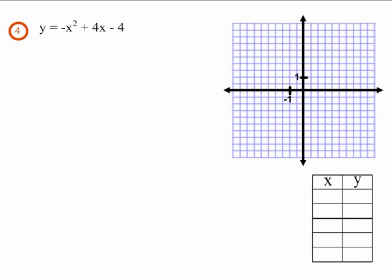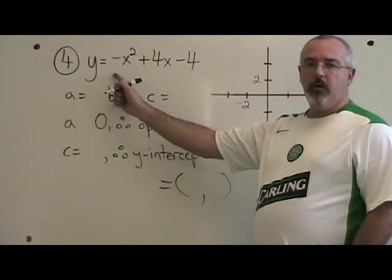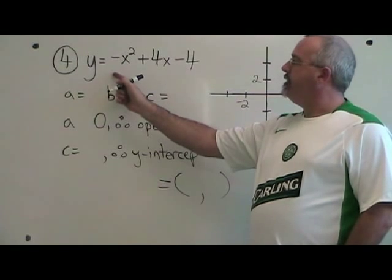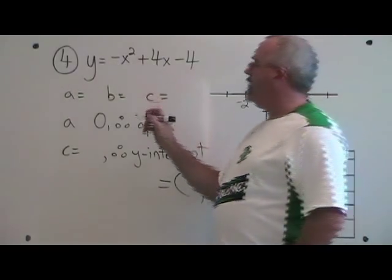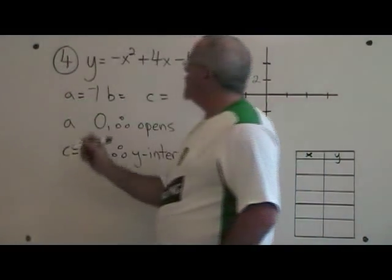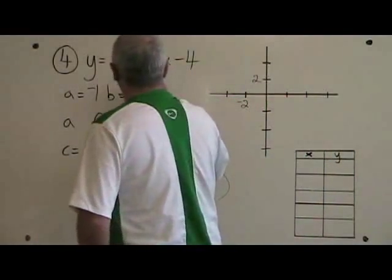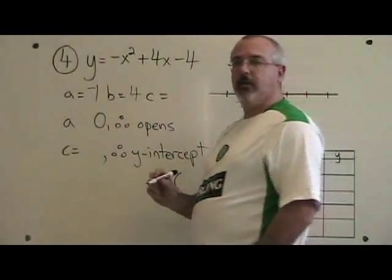In example 4, my equation is y equals negative x squared plus 4x minus 4. Let's begin to graph it. My a is the numerical coefficient of the first term, a equals negative 1. b is the numerical coefficient of the second term, b equals 4. c equals the numerical coefficient of the third term, c equals negative 4.